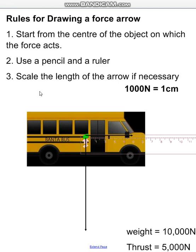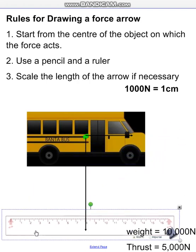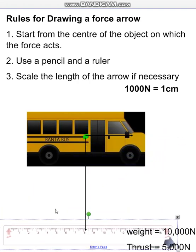Force arrows are represented with one straight line using a pencil and a ruler. The longer the arrow is, the bigger the force is. You're not interested in the width of the arrow at all. It doesn't mean anything to a physicist. So don't fall into that trap. And you always start from the centre of the object, the centre of mass.